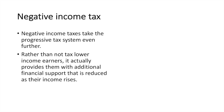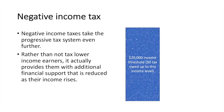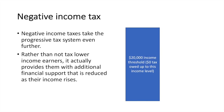To understand how this works, let's look at a system that does not have a negative income tax. All income up to $20,000 is earned tax-free. Beyond this point, different marginal tax rates apply.